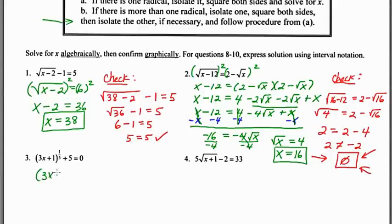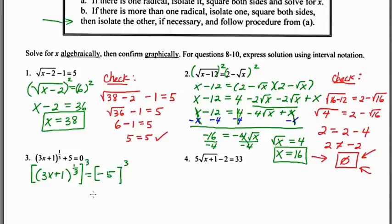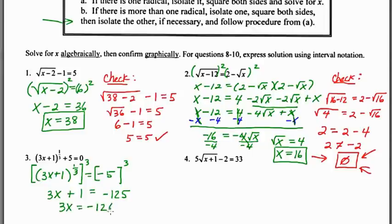Moving on to number three, I'm going to isolate the radical: (3x + 1)^(1/3) = −5. I'm going to raise both sides to the reciprocal power — the reciprocal of 1/3 is 3. (−5)³ = −125, and raising a power to a new power means we multiply exponents, so we're left with 3x + 1 = −125. Subtracting one gives 3x = −126, and dividing by three gives x = −42.